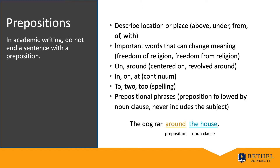Here are a few things to know about prepositions. Use 'centered on' and 'revolved around.' Understand the in/on/at continuum: 'in 2020,' 'on January 1st,' 'at 2:30 p.m.' — notice how 'on' is more specific than 'in,' and 'at' is more specific than 'on.' Spell the preposition T-O correctly: T-O is a preposition, T-W-O is a noun or adjective, and T-O-O is an adverb or modifier. A preposition followed by a noun clause is called a prepositional phrase, which will be important when we discuss subject and verb agreement.